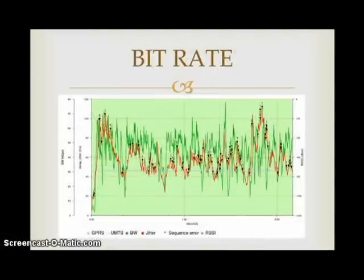Next we'll talk about bitrate. Bitrate is defined in multiple ways: in decimal prefixes it's kilobit per second, megabit per second, gigabit per second, and terabit per second; in binary prefixes it's kibibit per second, mebibit per second, and gibibit per second. In telecommunications and computing, bitrate is the number of bits conveyed or processed per unit of time.